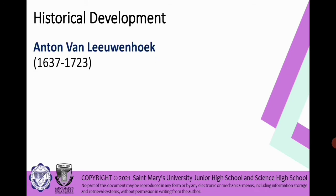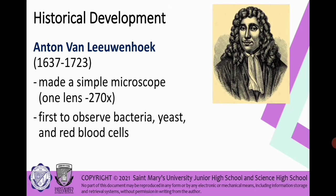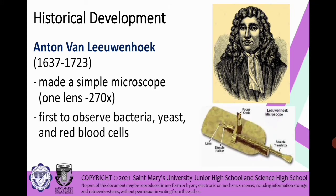Then afterwards Anton van Leeuwenhoek discovered also or made a simple microscope that is one lens, magnifying 270x, wherein it uses to observe the first bacteria he is in red blood, in red blood cells. There he is and this is the simple microscope that he uses. There are parts: there are lens, sample holder, focus knob, and also sample translator.